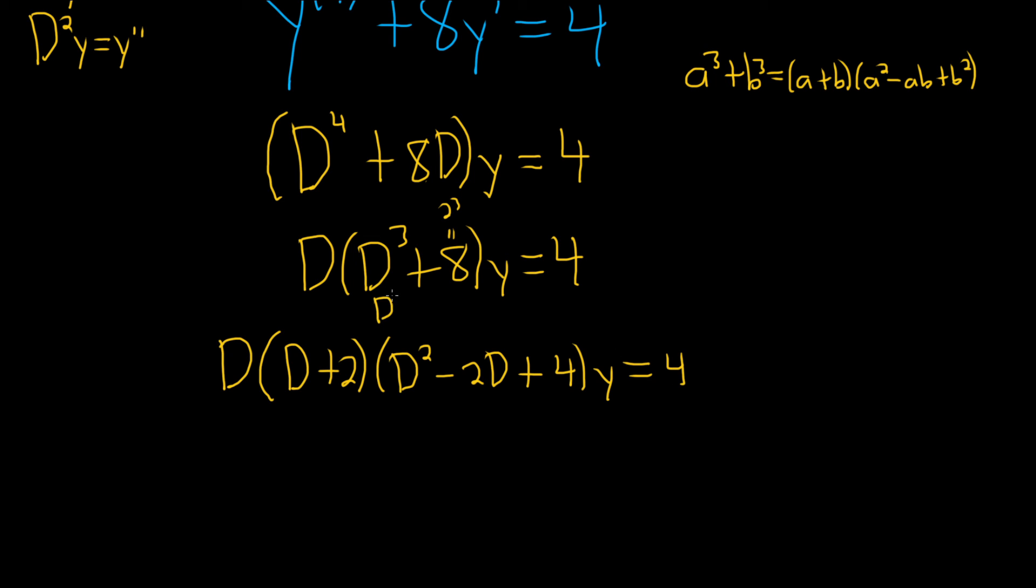So if it's not clear, it's D cubed plus 2 cubed. D is our little a, 2 is our little b. So it's a plus b, then a squared minus ab (which is 2D), then plus b squared (which is 4). Everything looks okay.